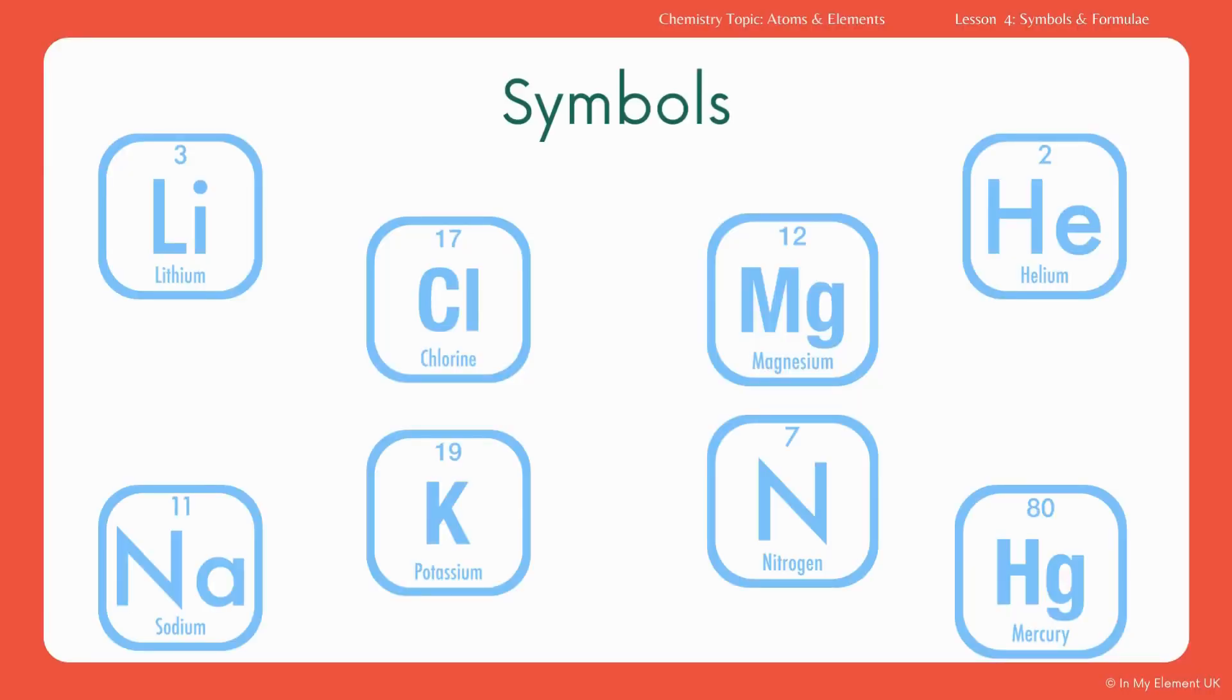We are going to take a look at all the different symbols you can see there, and these are often found in the periodic table. Then we're going to look at the formulae that these symbols can form when they make compounds, and we're also going to look at how you write the equations and have a go at balancing some.